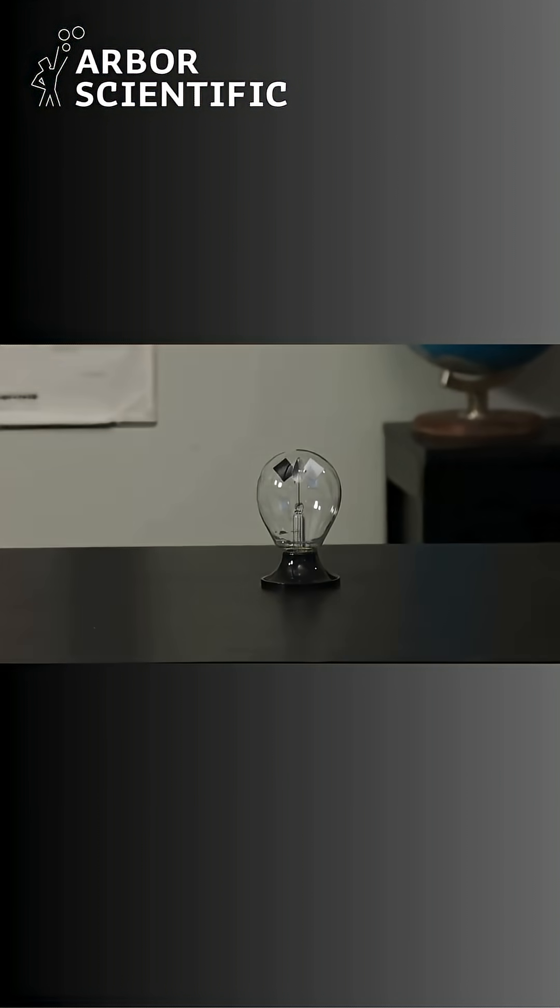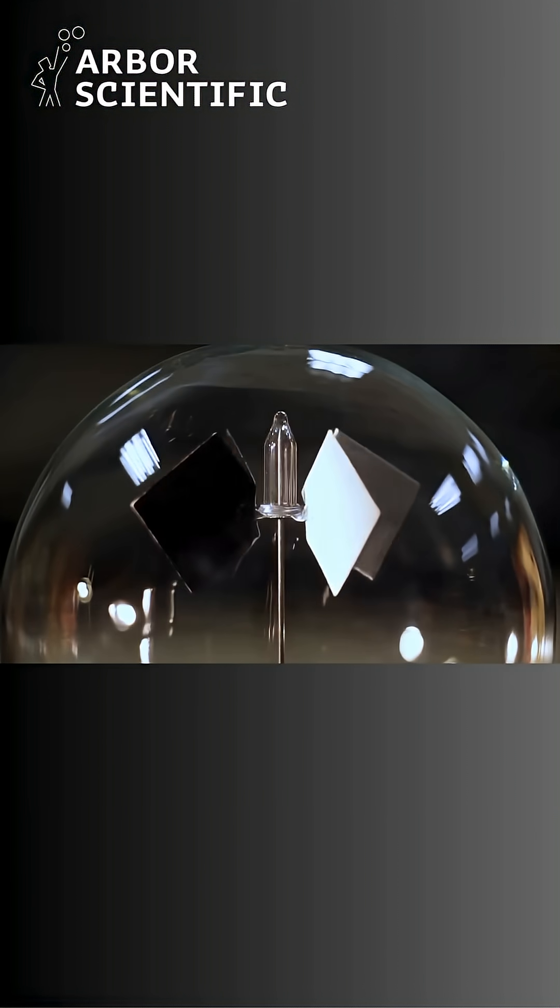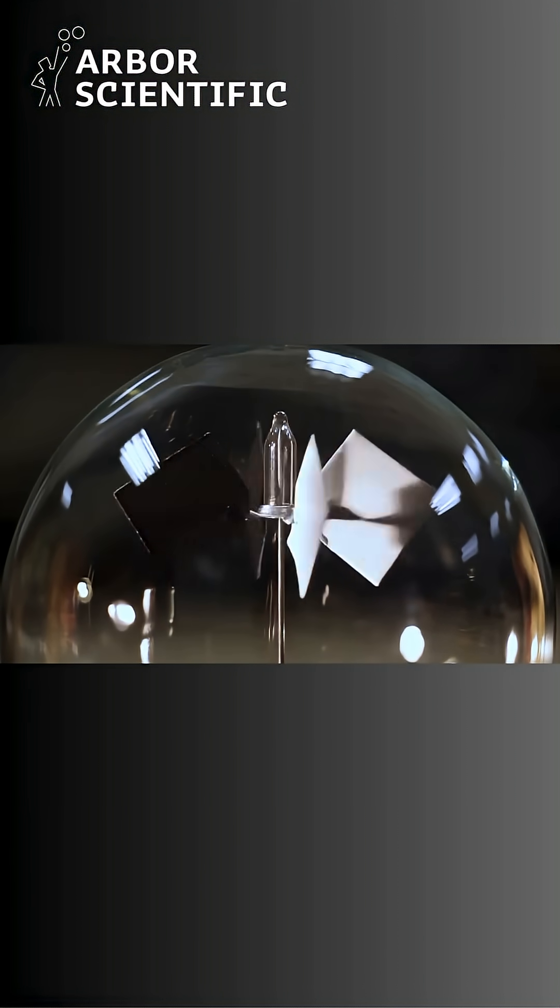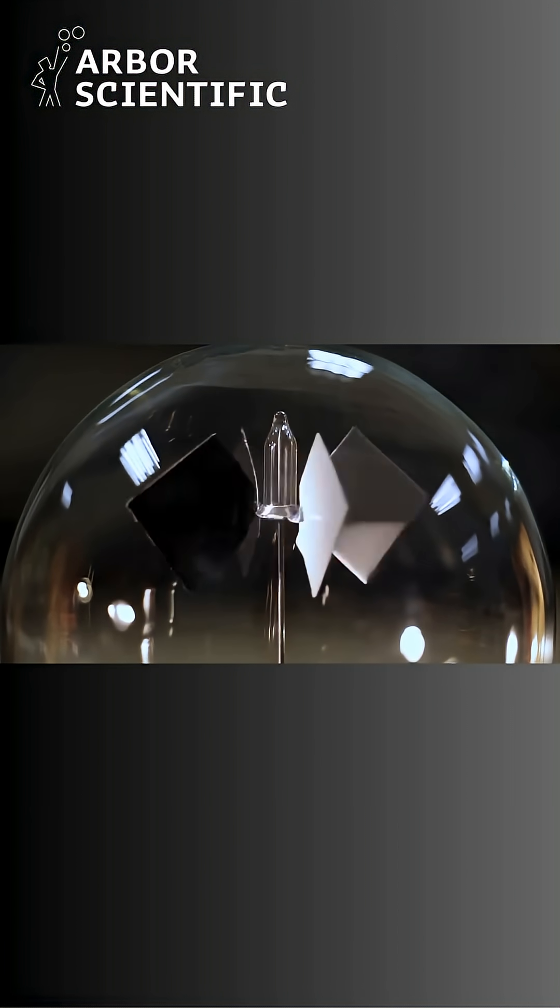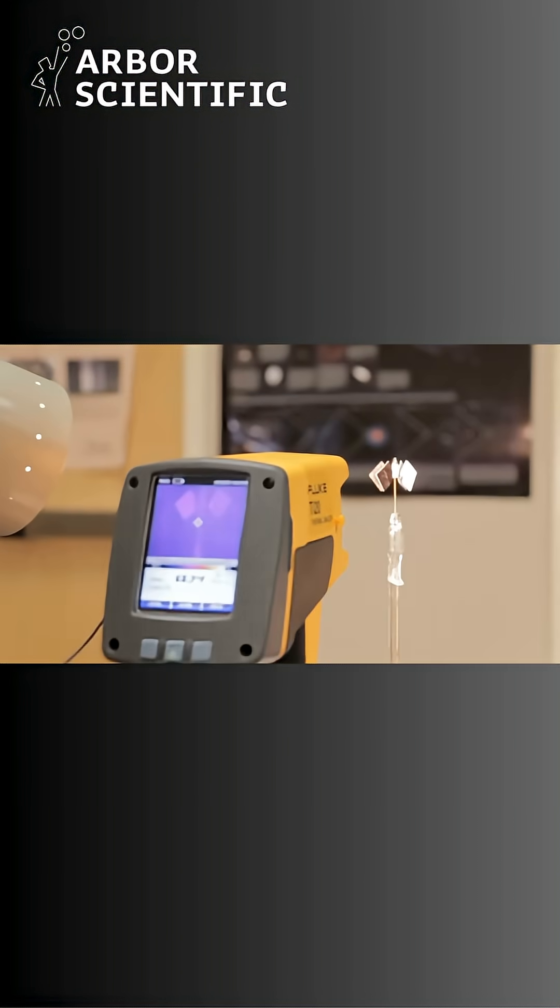Familiar with the light mill radiometer? You shine light on it and it spins. The tiny air pressure inside changes to a bit higher on the dark side, which pushes it into motion. This happens because the black side heats up faster than the white side.